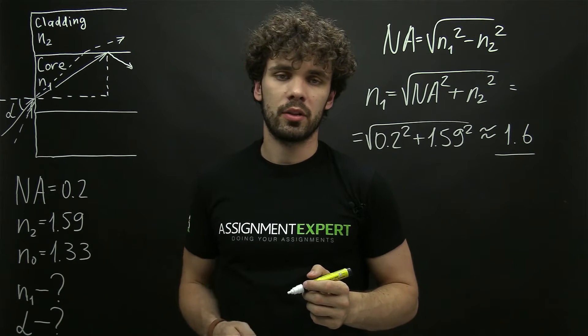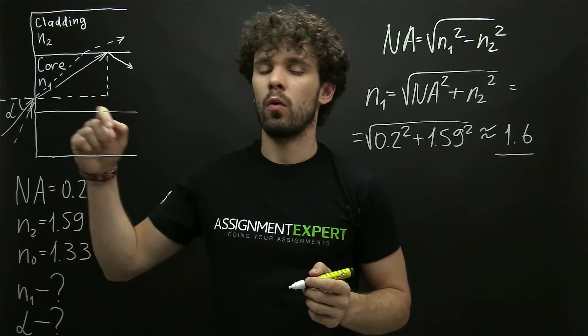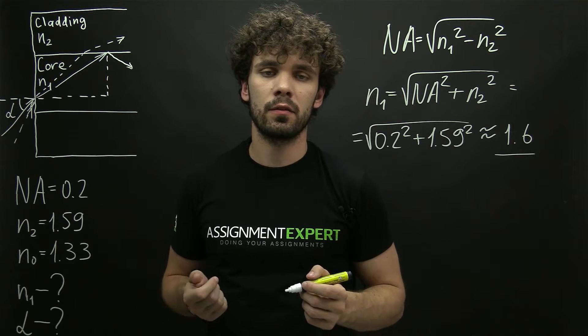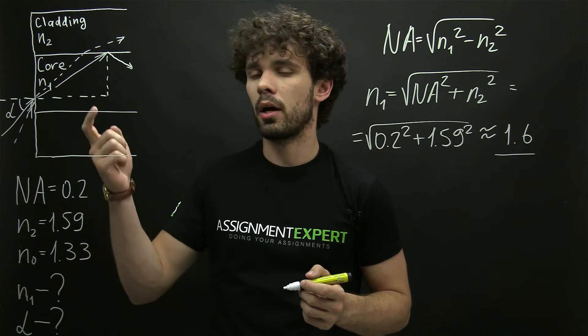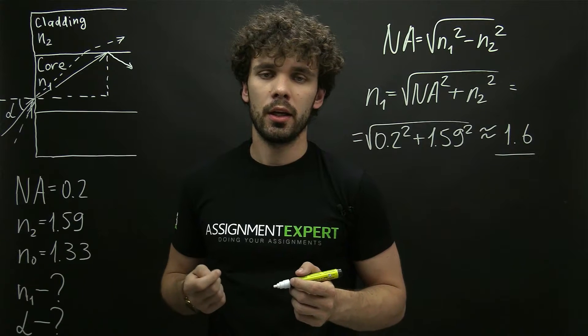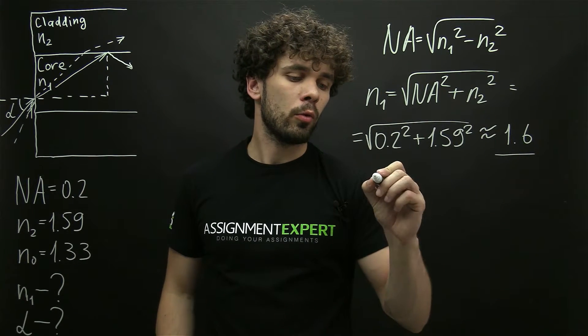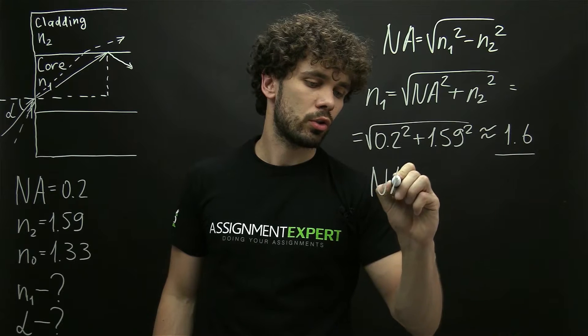Now the acceptance angle. The acceptance angle is the angle over here which indicates the size of the cone of light which can be accepted by the optical fiber.